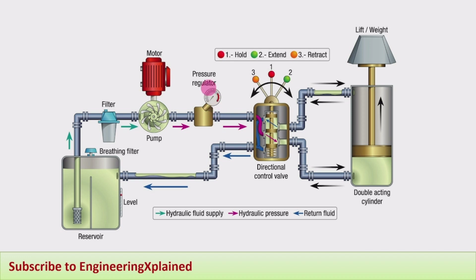Pressure valves are called pressure control valves, flow rate valves are called flow control valves, and direction control valves are called DCVs. These are the three types of valves used in the hydraulic system.